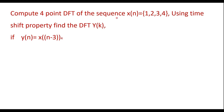Compute the 4-point DFT of the sequence x(n) = {1, 2, 3, 4} using the time-shift property. Find the DFT Y(k) if y(n) = x(n-3). In this numerical, the sequence x(n) is given and we should find DFT Y(k) where y(n) = x(n-3) using the time-shift property.